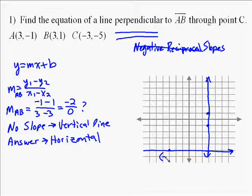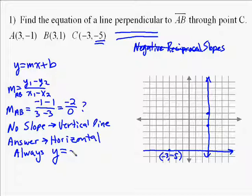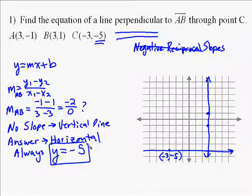And on our problem, the y-coordinate is negative 5. And so our answer is going to be y equals negative 5, because it's always y equals a number. And in our case, that y value is always negative 5. And so the solution is y equals negative 5.